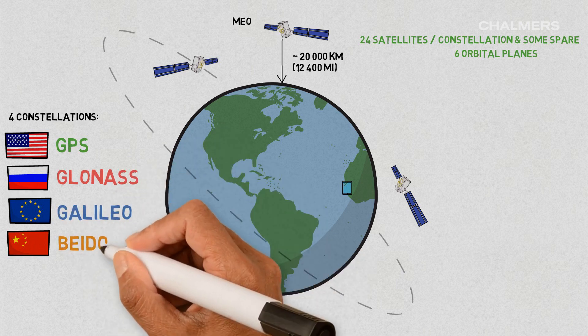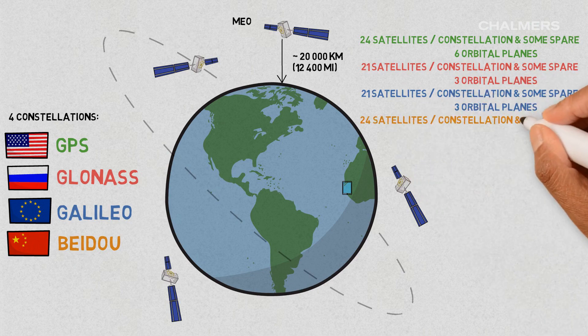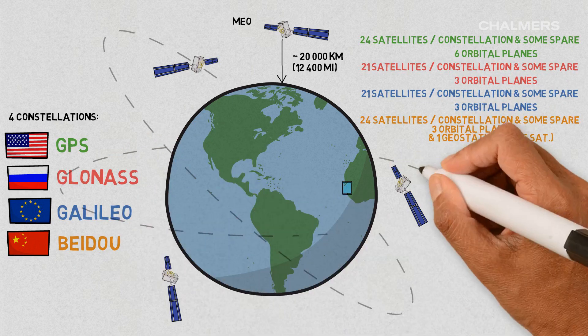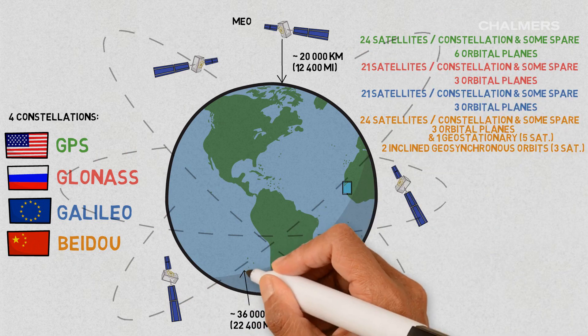Other systems, like GLONASS, Galileo or Beidou, look similar, differing slightly in terms of the number of satellites per orbital plane, orbit inclination angle or the quantity of the utilized orbital planes.